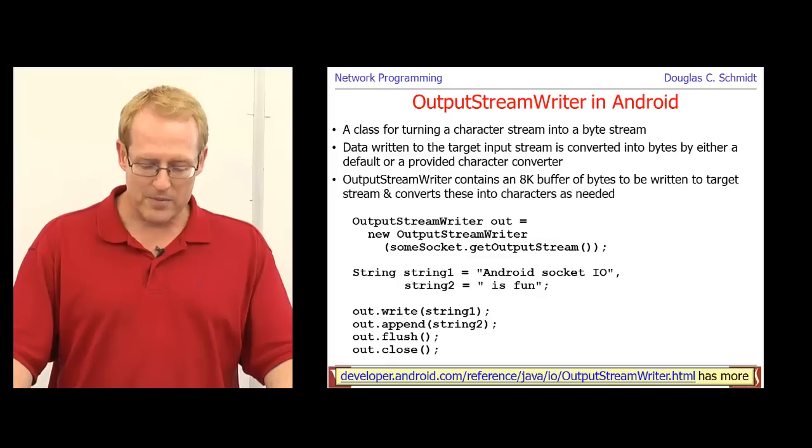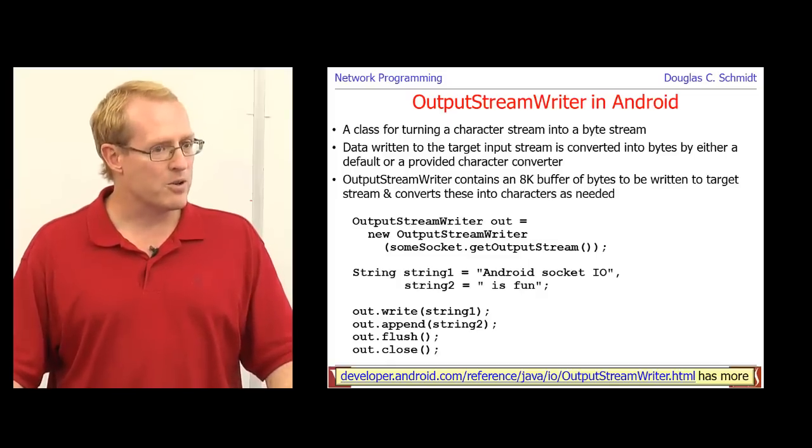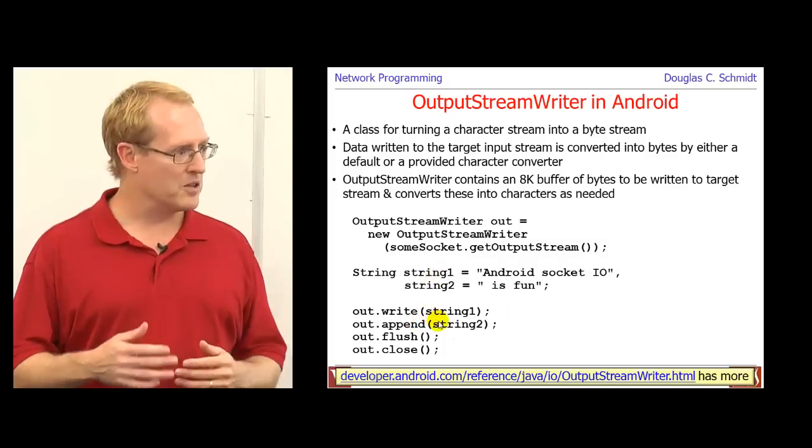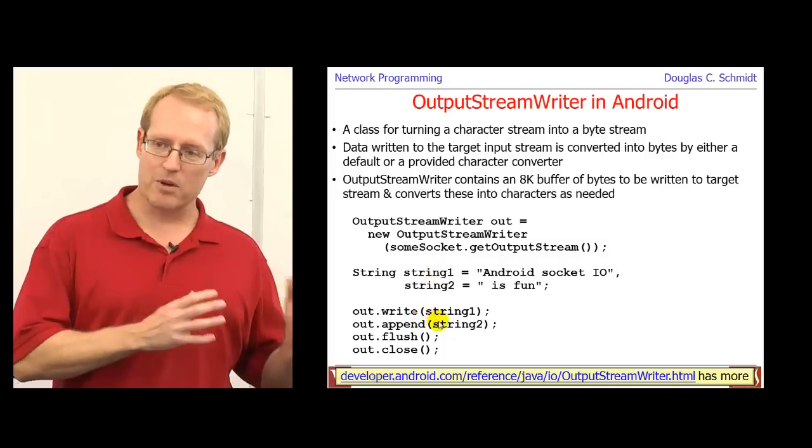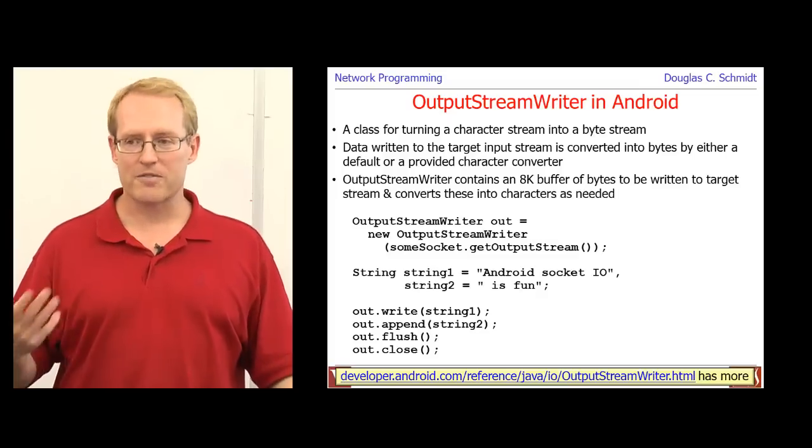Something else you can do, just like we did for input data, you can also have an output stream writer. And this can be a way of converting a character stream into a byte stream. So as you can see here, we use our decorator pattern to encapsulate a few things. And then we have some strings, and we write those strings, and we append the strings, and those things get buffered. And when we flush, it goes ahead and flushes the buffer. The buffer will also get flushed if it fills up.